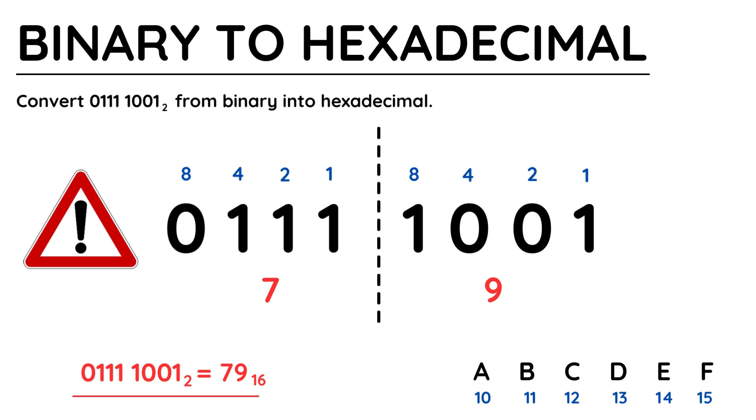Also be aware, the hexadecimal value may not contain a number either, it could be 2 letters for example, such as AC or EE.